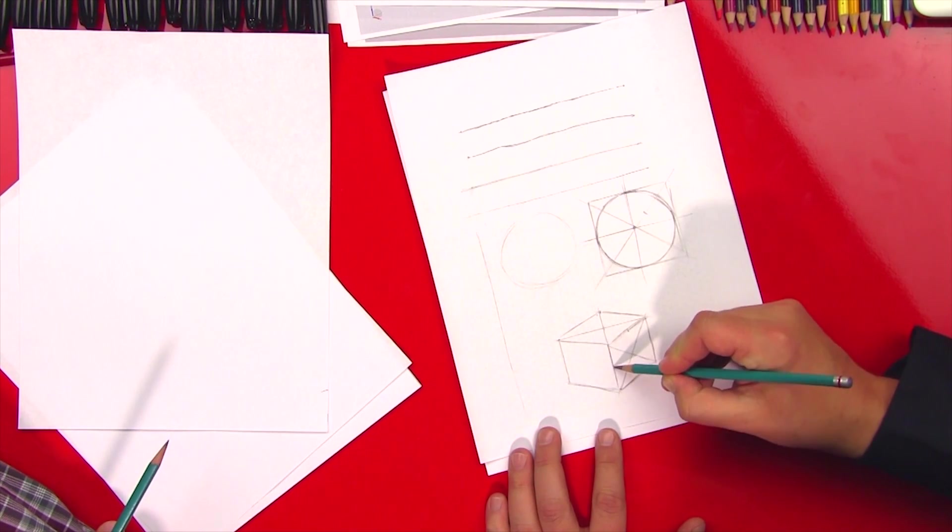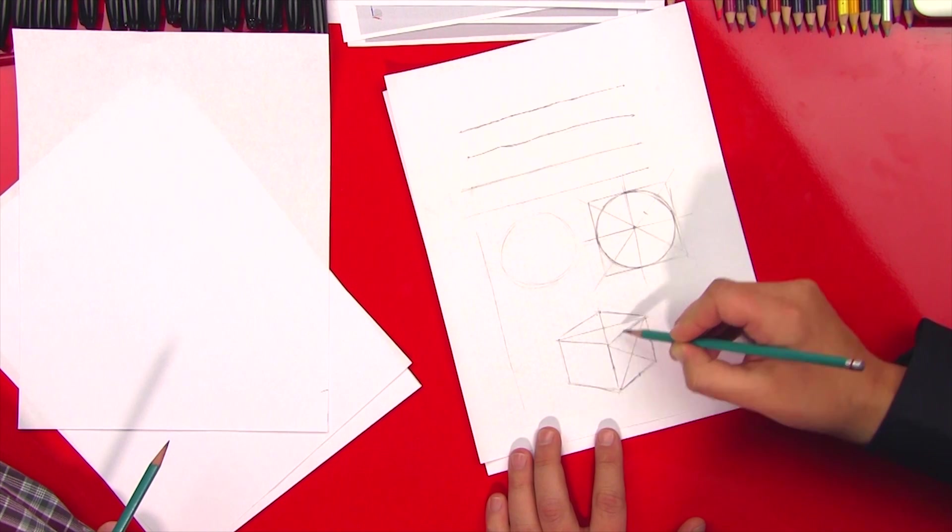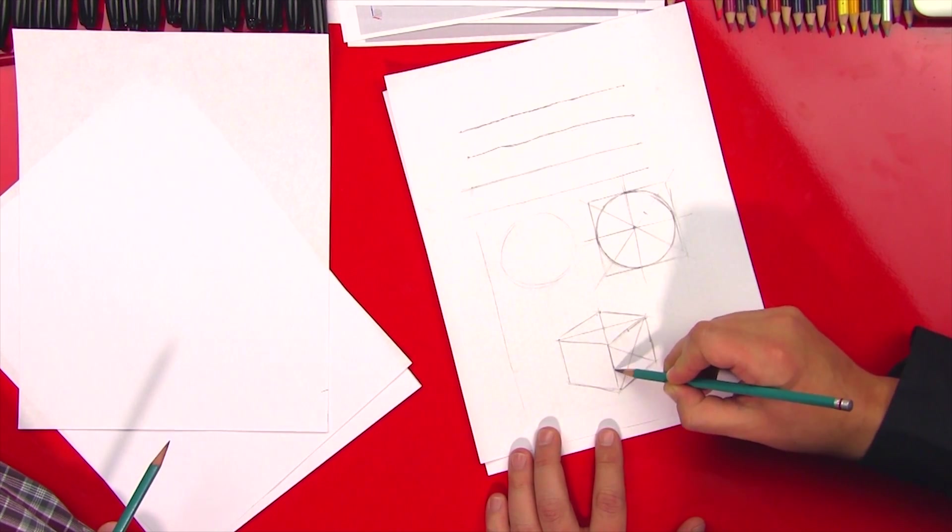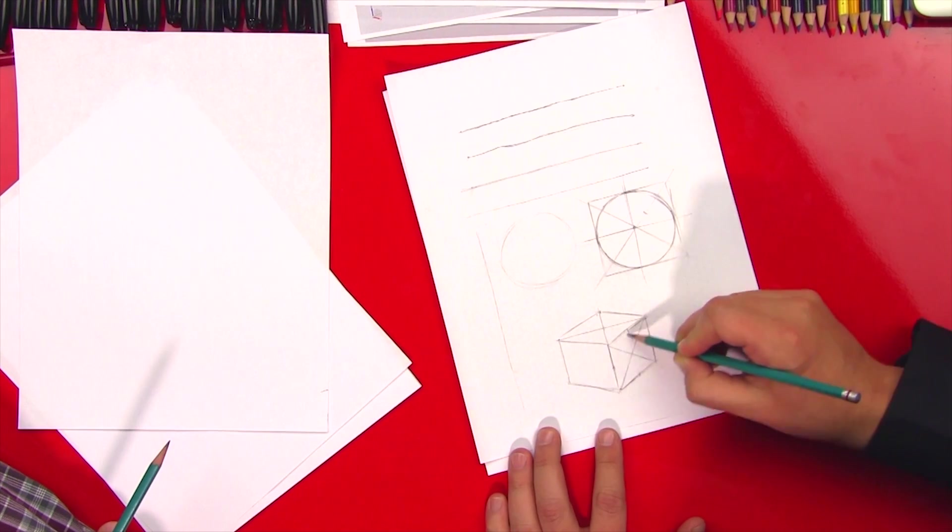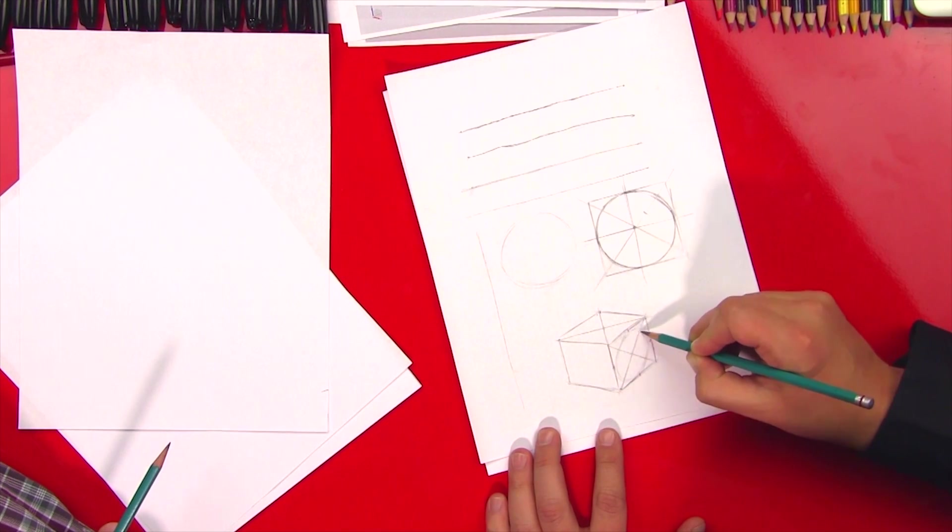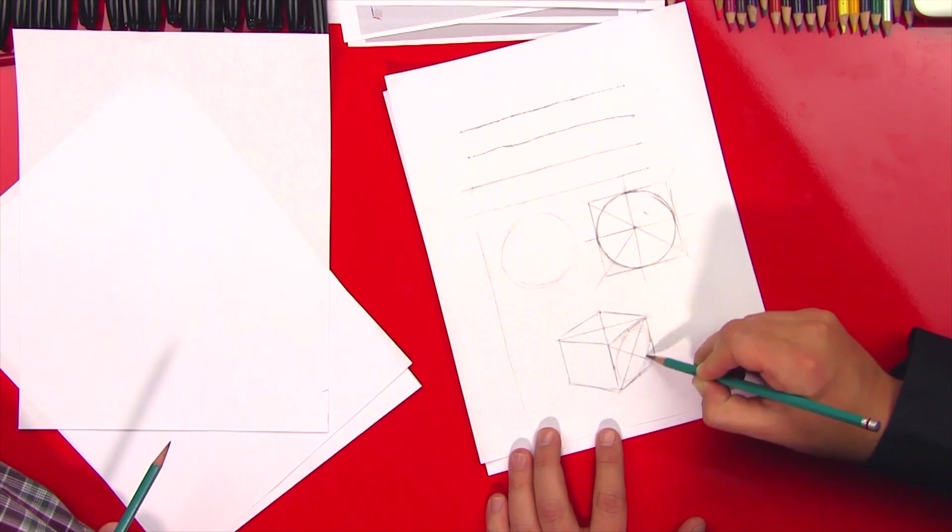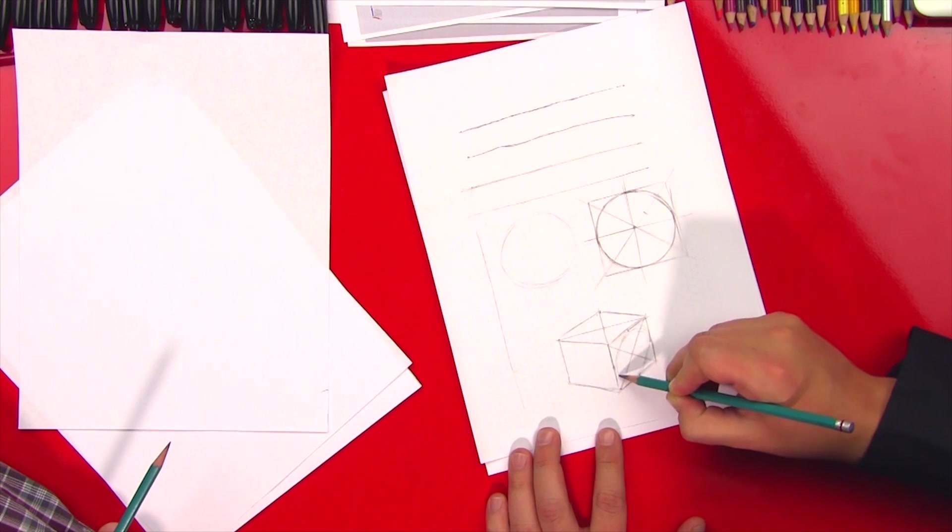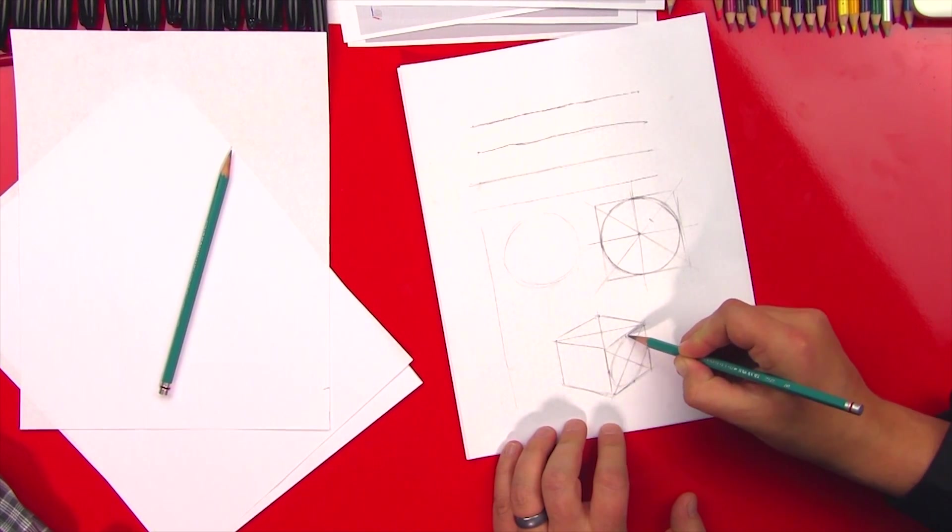And then the circle actually needs to touch on the center point of each of the edges. And so I could probably just hit it there. I would just probably do this and practice and just lightly go in until it starts looking right.